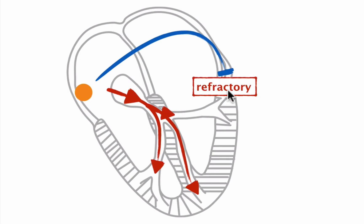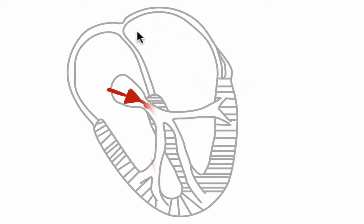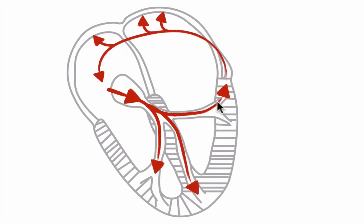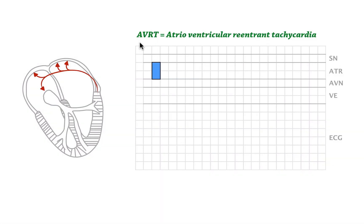What happens next? The bundle of Kent leaves its refractory period, and the impulse travels back up to the atria, and a circus movement tachycardia is established. This type of tachycardia is called AVRT — atrioventricular reentrant tachycardia.